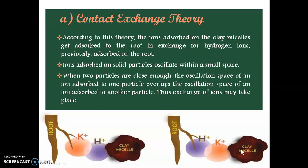In contact exchange theory: potassium ions are adsorbed on clay micelles or soil particles, and on the root hairs, hydrogen ions are adsorbed. These ions vibrate or oscillate like a pendulum clock within a specific space called the oscillation space. If the oscillation spaces of potassium ions on clay micelles and hydrogen ions on root hairs overlap, then the chances of exchange increase. The potassium ions from clay micelles will move to the roots and the hydrogen ions from roots will exchange with the soil. This is how plants absorb potassium ions through their roots — this is called contact exchange.